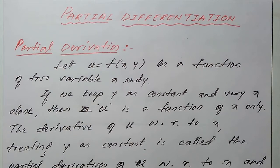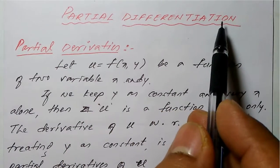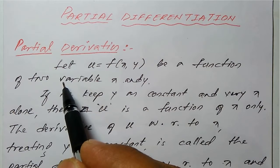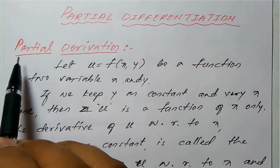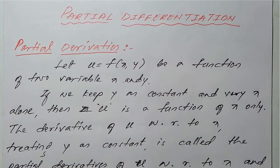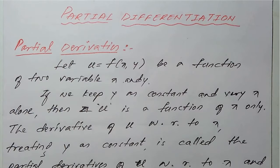Hello everyone. In this session we will see partial differentiation — how to differentiate a function with respect to a given variable partially. To perform partial derivatives, we need a minimum of two variables. We must know at least two variables to carry out partial differentiation.